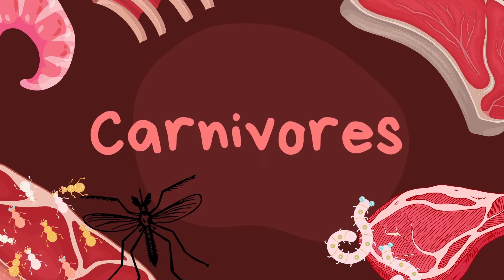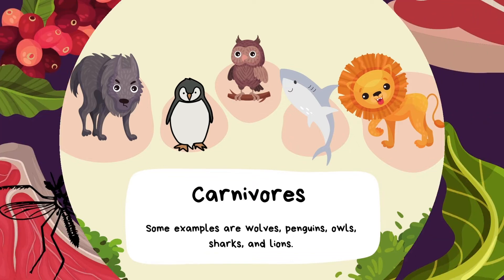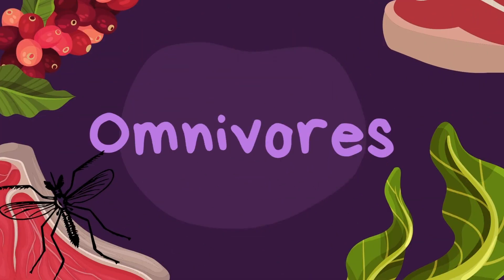Carnivores eat meat, like other animals or even bugs. Some examples of carnivores are wolves, penguins, owls, sharks, and lions.